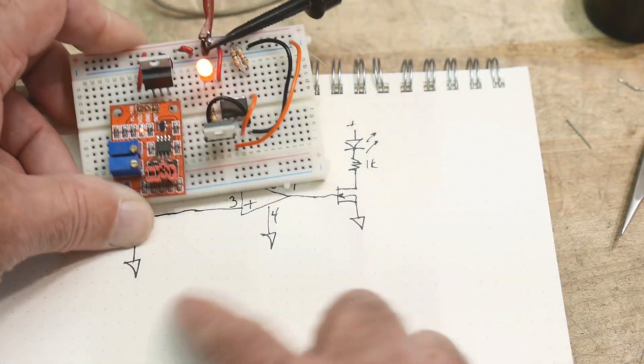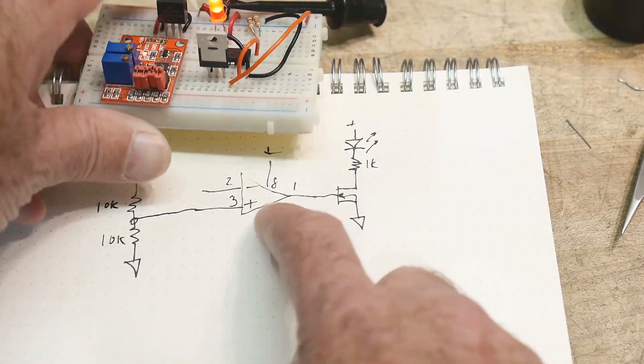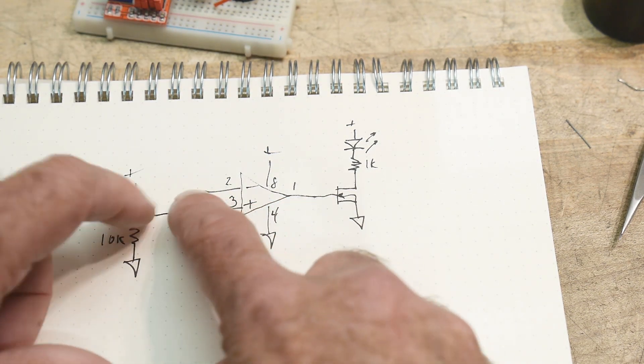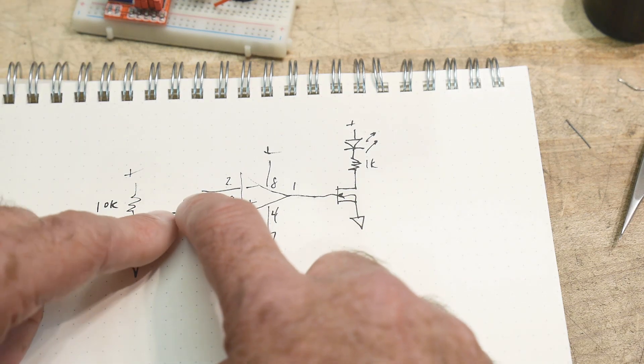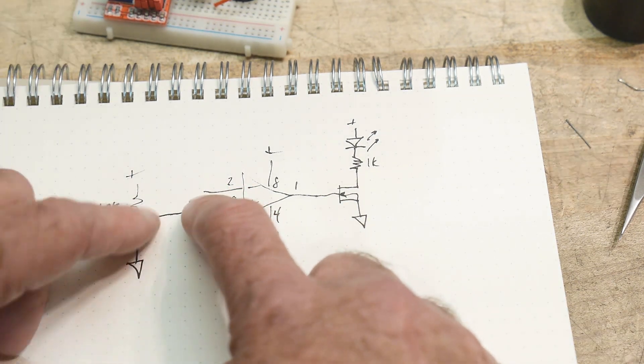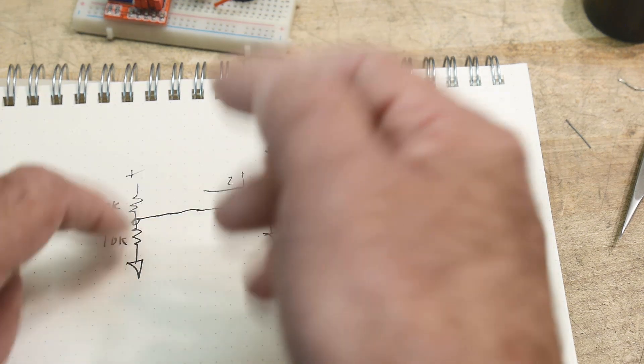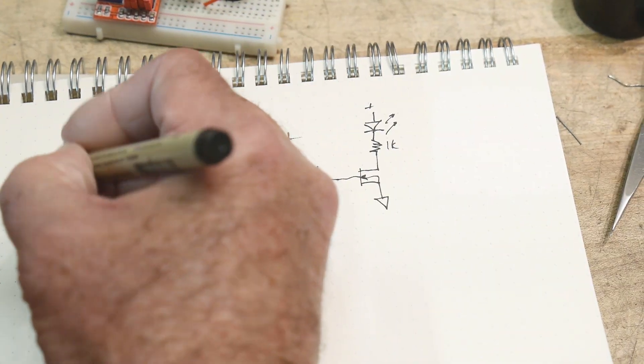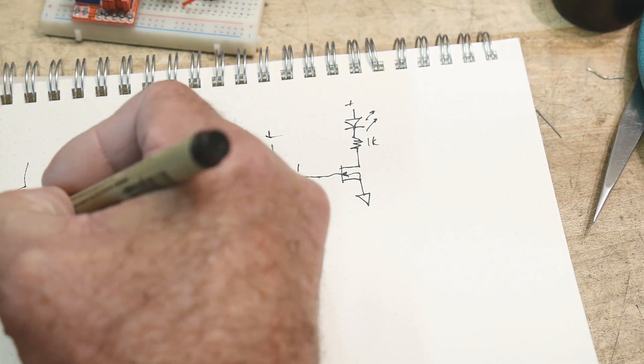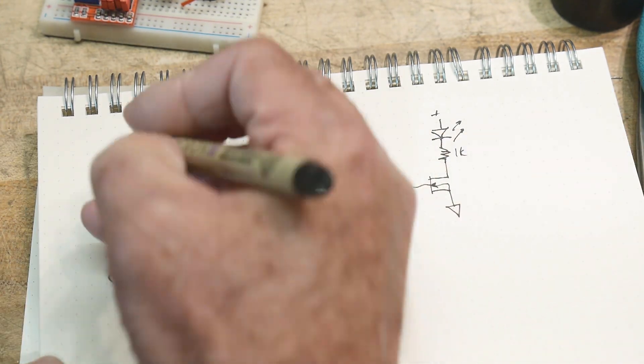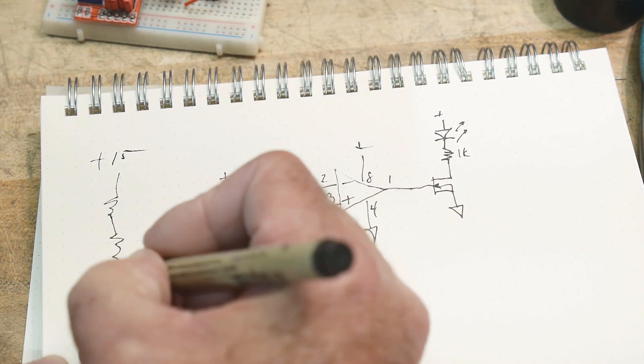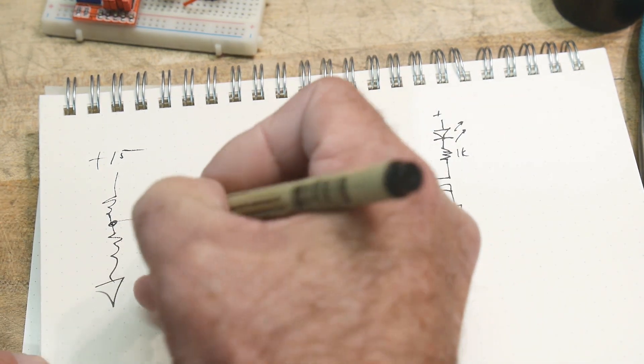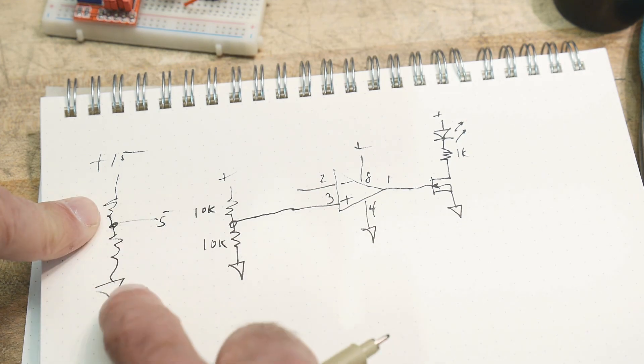All right, so now we have a comparator, and it swings around 5 volts. And so we want it to actually, let's say we want to regulate at 15 volts. Well we need to take our 15 volt, and we need to put it in a resistor divider. So let's say we want to regulate to 15 volts. We want to choose these resistors such that we get 5 volts out, right?